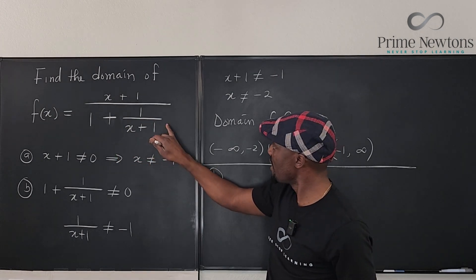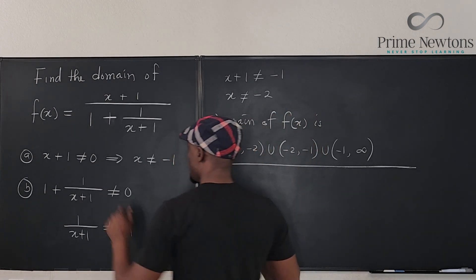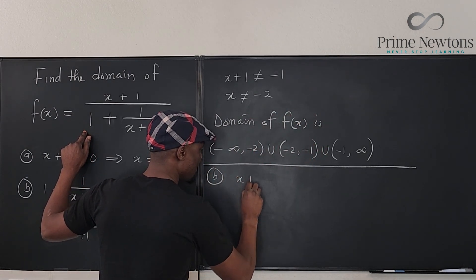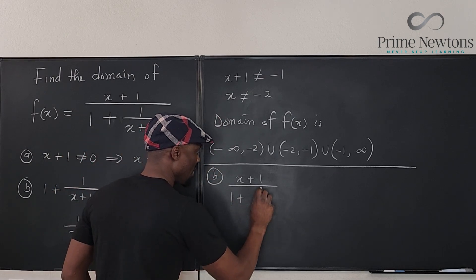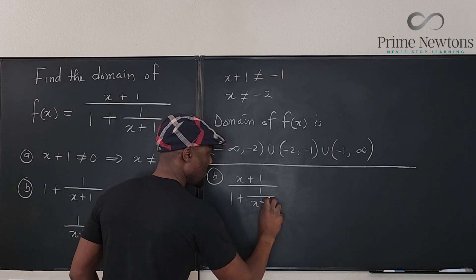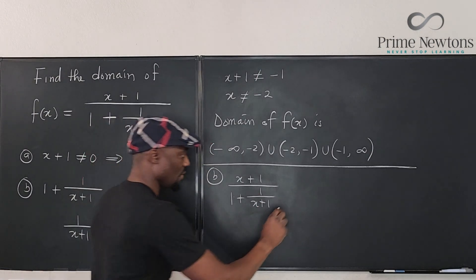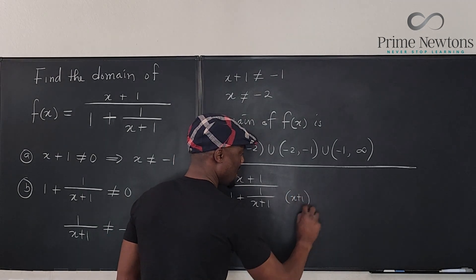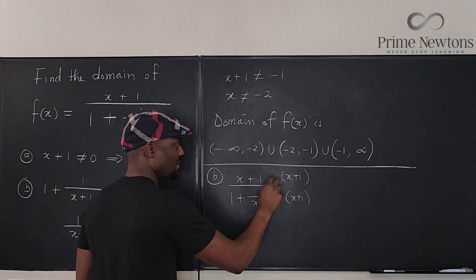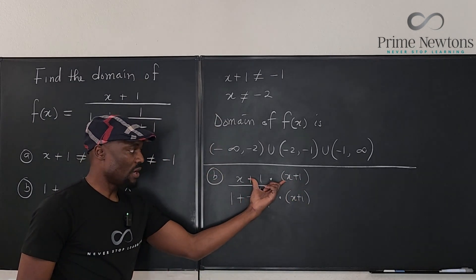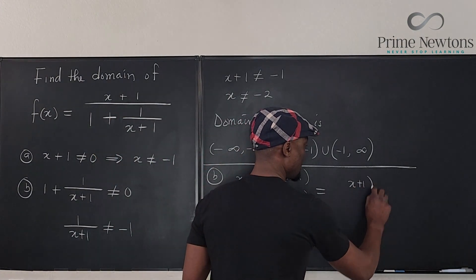So what I'm going to do is multiply the top and bottom by x plus 1. So watch this. I'm going to say x plus 1 divided by 1 plus 1 over x plus 1. So I'm going to multiply the top and bottom by x plus 1. I'm multiplying the top and bottom by the same thing. See what happens?